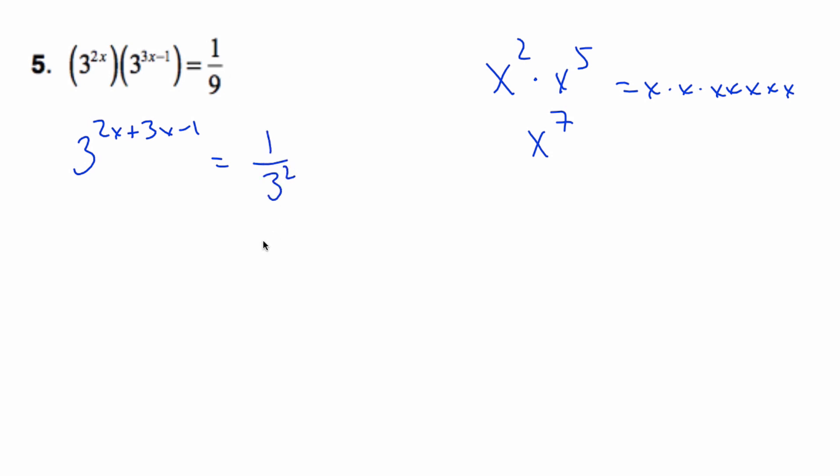Which I know I can rewrite that as 3 to the minus 2. And so now if I equate this exponent, it must be the same as this mess of exponents. And so, well, 5x minus 1 is then equal to negative 2. 5x is equal to negative 1. By adding the 1 divided by 5, and x will be negative 1/5 is the equation.